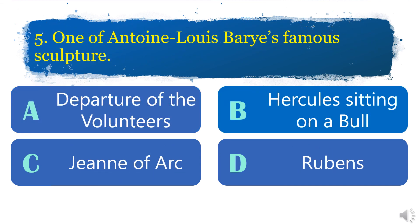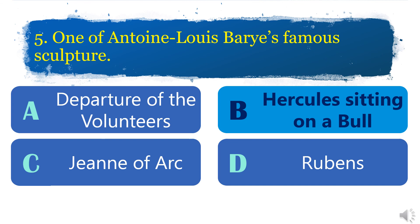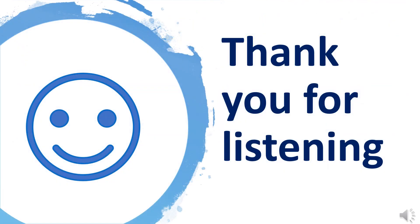Number 5: One of Antoine Louis Barry's famous sculptures. A. Departure of the Volunteers. B. Hercules Sitting on a Bull. C. Joan of Arc. D. Rubens. The correct answer is letter B. All right. How many correct answers did you get? Very good. And that completes our lesson for today. Thank you.